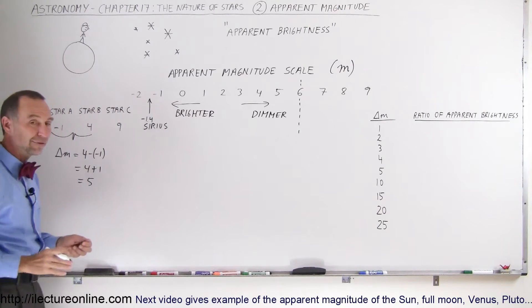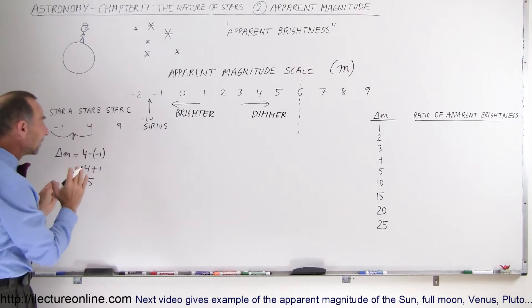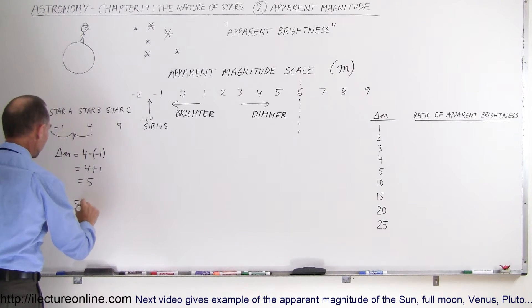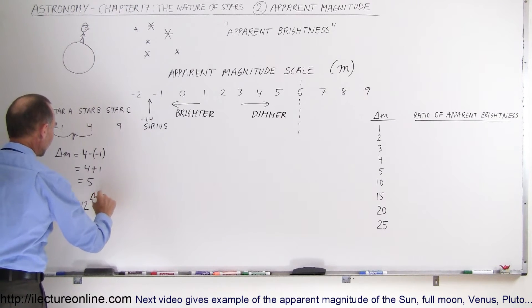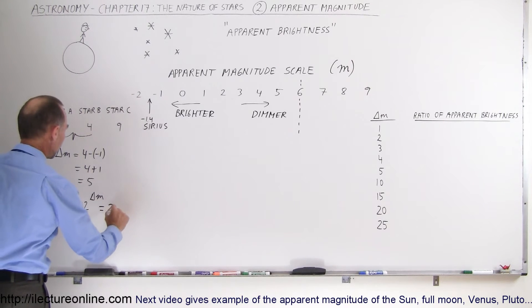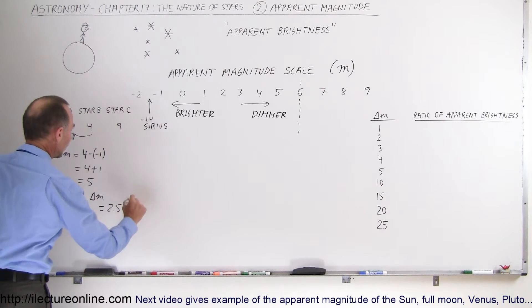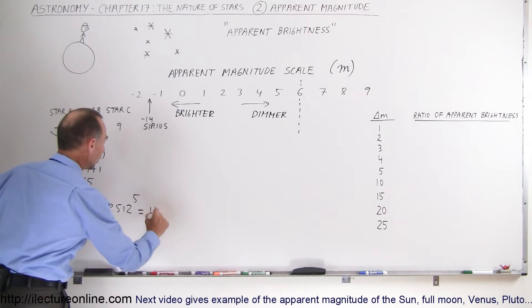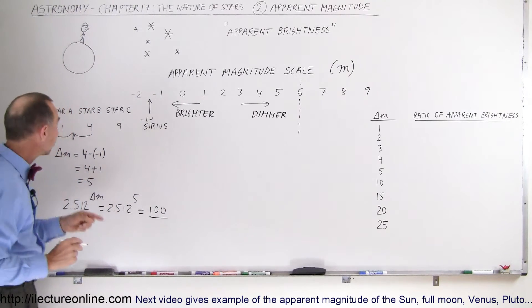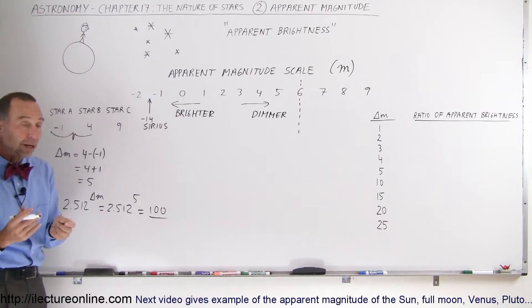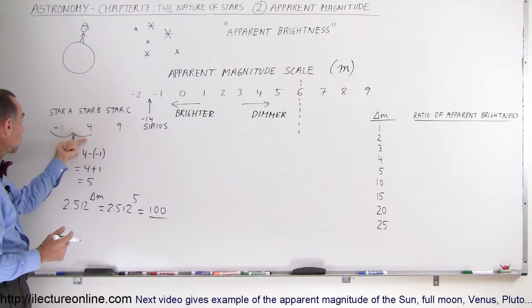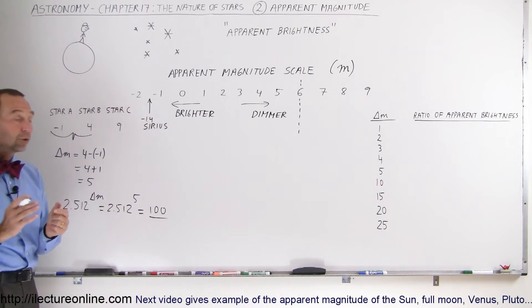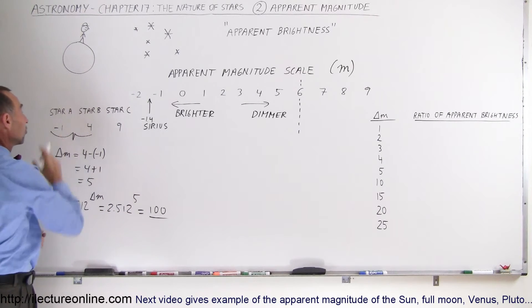With a little arithmetic we find the difference in the magnitudes. To find the difference in brightness, we take the number 2.512 and raise it to the difference in magnitude. In this case, that would be 2.512 raised to the fifth power — because the difference in magnitudes is 5 — and this is actually equal to 100. So Star A is 100 times brighter than Star B. If you had 100 stars like Star B with a magnitude of 4, they would give out the same amount of light as a single Star A with a magnitude of negative 1.